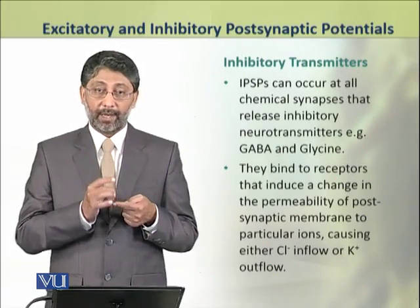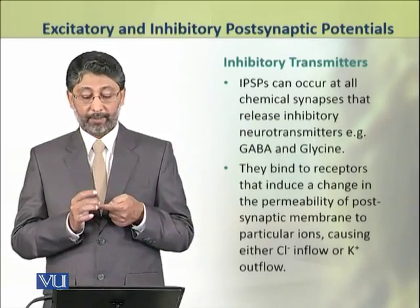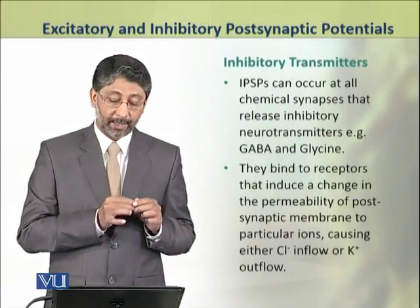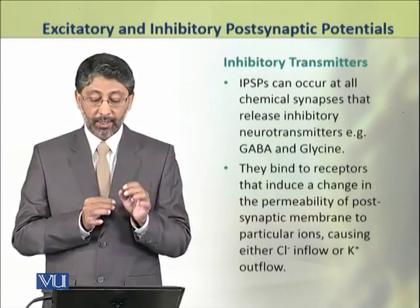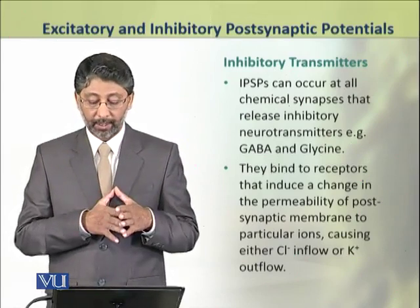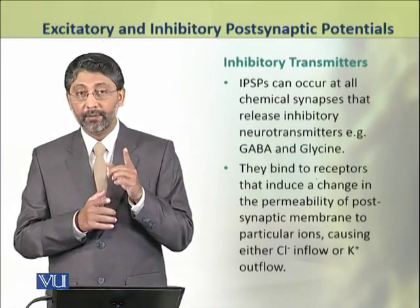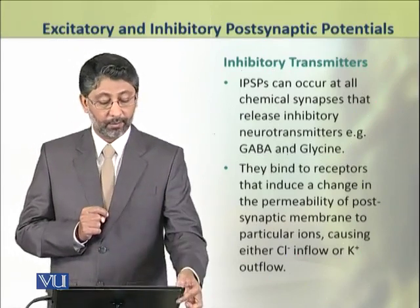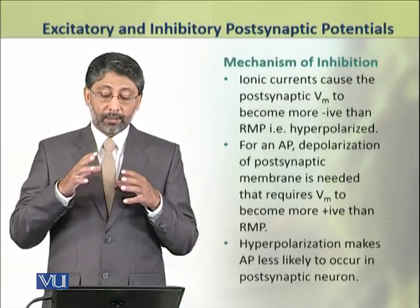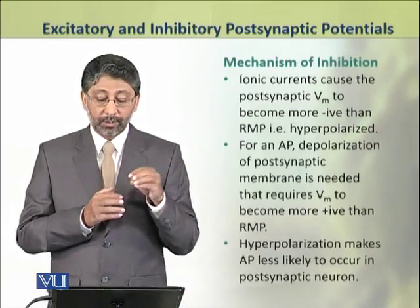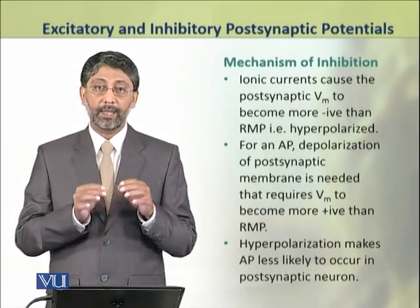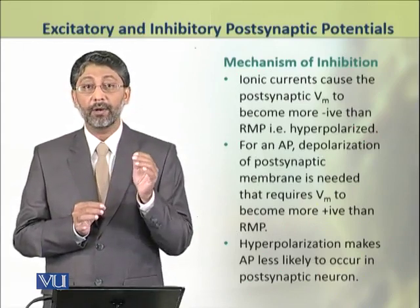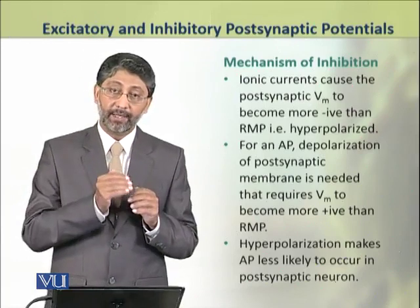Gamma-aminobutyric acid (GABA) and glycine are inhibitory neurotransmitters that bind to receptors which induce a change in the permeability of the postsynaptic membrane to particular ions — that is, chloride or potassium ions. The mechanism of inhibition due to these neurotransmitters includes ionic currents that cause the postsynaptic membrane to become more negative than the resting membrane potential.